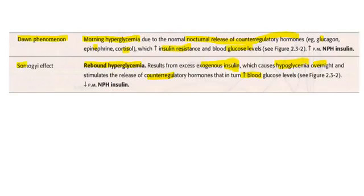The two ways you can remember: in dawn phenomenon, there is release of counter-regulatory hormones which increase the hyperglycemia, which increase the blood glucose levels. But here we are using excess exogenous insulin. So what we have to do in dawn phenomenon — we have to just increase the NPH insulin.